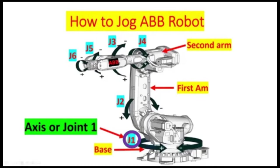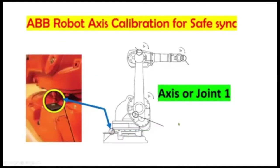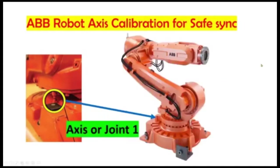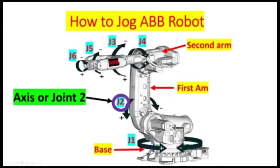And these are the joints: joint 1, joint 2, joint 3, joint 4, joint 5, and joint 6. This is axis number 1 and this is the mechanical drawing showing the locations of axis or joint 1, axis or joint 2, located on the first arm.